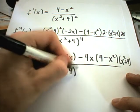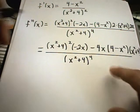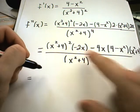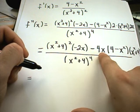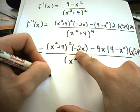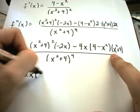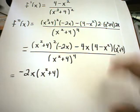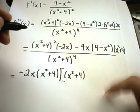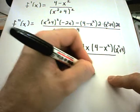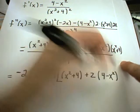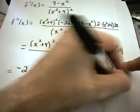The denominator is x squared plus 4 to the fourth. Notice if I clean this up, I've got an x squared plus 4 in both terms of the numerator. I can factor that out. I've also got an x in both terms, and I can factor out the negative 2 as well. So I'm going to factor out negative 2x and one of the x squared plus 4 factors. Inside the parentheses, I'll be left with an x squared plus 4 term, plus 2, then 4 minus x squared.